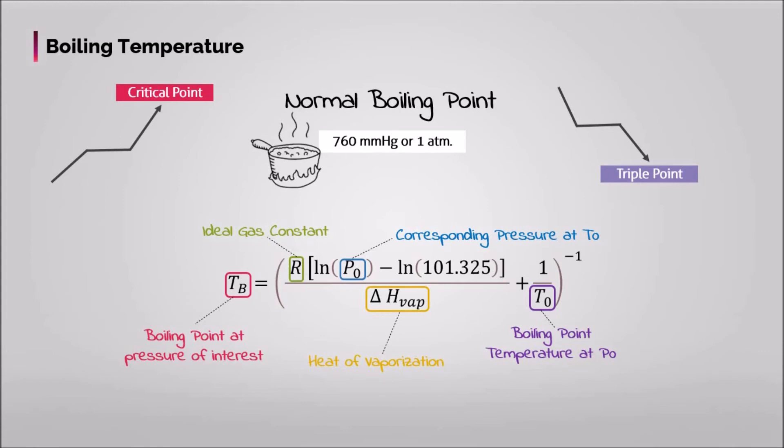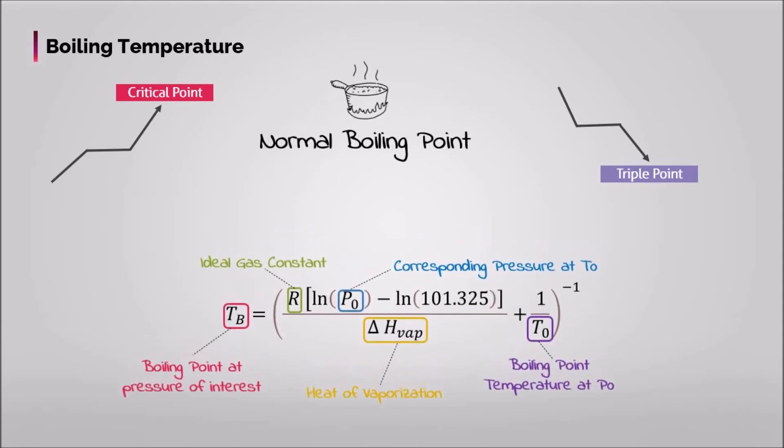Usually data is available at 1 atmosphere or 100 kilopascal. Then, ΔHvap is the heat of vaporization of the liquid, and To is the boiling temperature at Po.